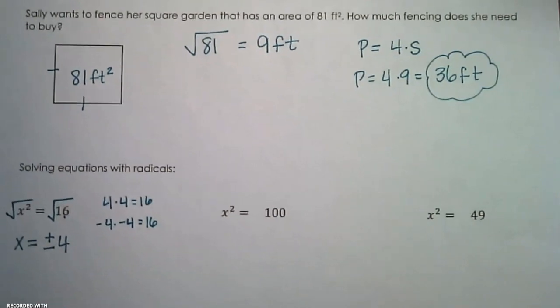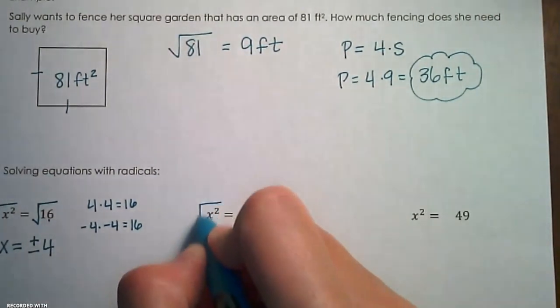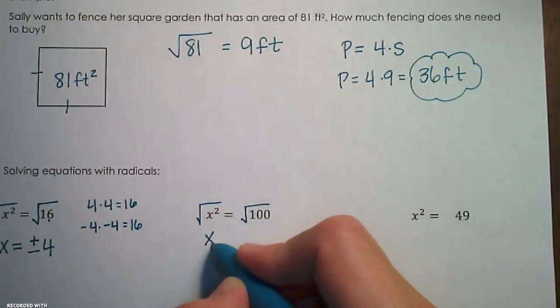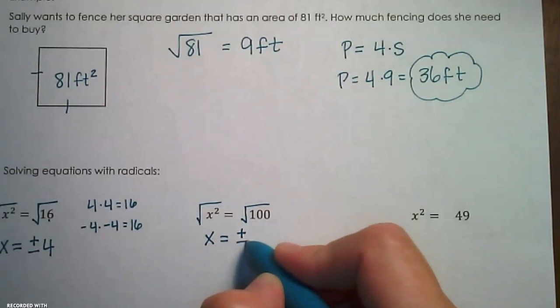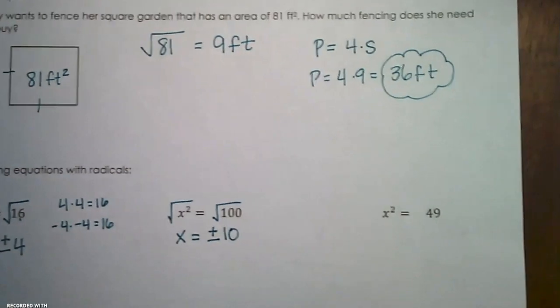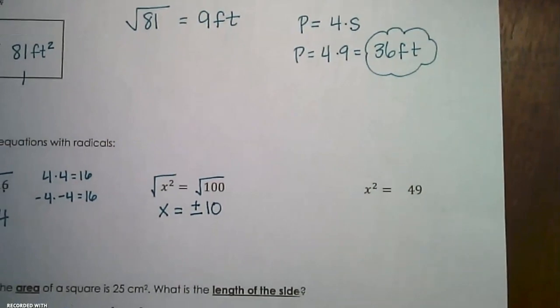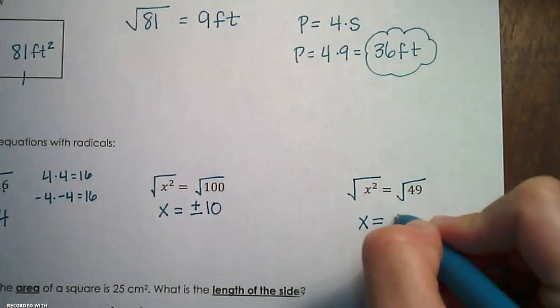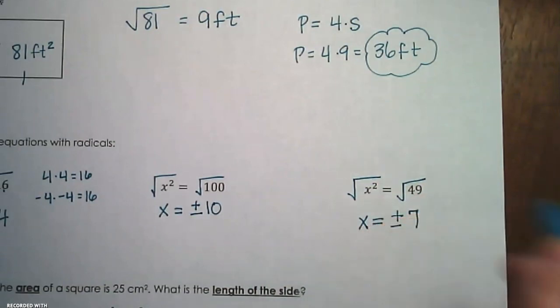Let's go to the next example. x squared equals 100. So we're going to unsquare or take the square root of both sides of the equation, and we are going to get x equals plus or minus 10. Next example, x squared equals 49. Same thing, we're going to take the square root of both sides of the equation, which gives x equals positive or negative 7.